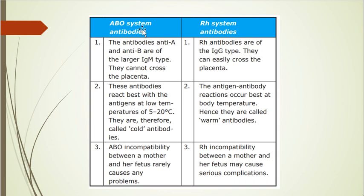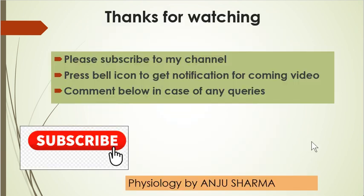The difference between ABO and RH antibodies: ABO system antibodies are IgM type, cannot cross the placenta, and are cold antibodies (survive at 5-20°C). RH antibodies are IgG type, can cross the placenta, and are warm antibodies. ABO has no incompatibility issues between mother and fetus, whereas RH incompatibility causes hemolytic disease of the newborn as discussed.